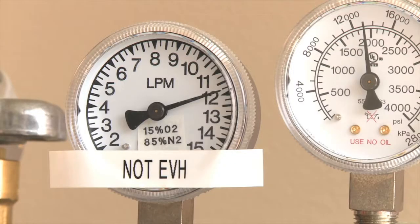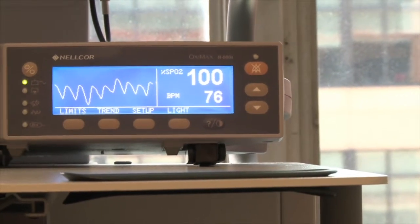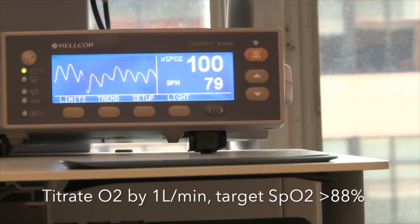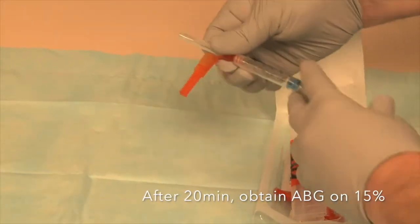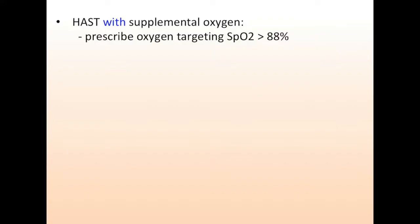With the 15% oxygen flowing, the patient's heart rate and SpO2 will be monitored continuously with the goal to keep an SpO2 greater than 88%. If necessary, supplemental oxygen will be added in at 1 liter per minute to keep that SpO2 greater than 88%. After the patient has been breathing the 15% oxygen mixture for 20 minutes, an arterial blood gas should be obtained. If the patient needed oxygen titration during testing to keep the SpO2 greater than 88%, then prescribe that amount of oxygen for air travel.